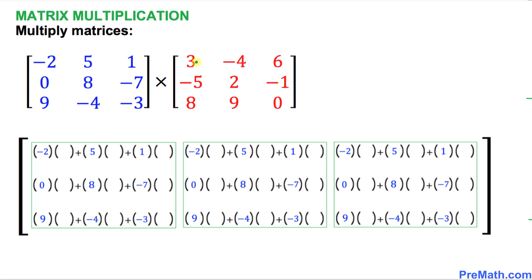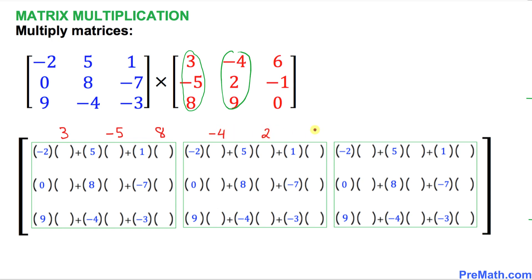Now we shift focus to the right hand side matrix — the red numbers. The very first column is 3, negative 5, 8. I am going to write this column as a row: 3, negative 5, and 8. The next column goes into the next box: negative 4, negative 4, 2, and 9. Finally, the third column: 6 goes up here, negative 1 goes over here, and 0 goes over here.